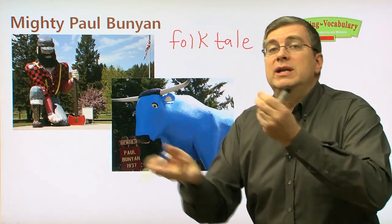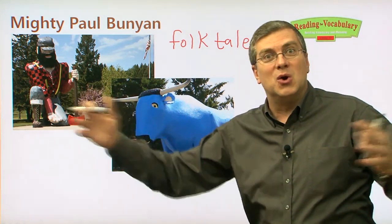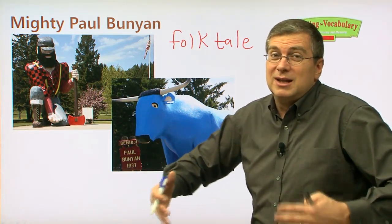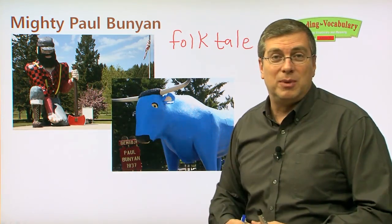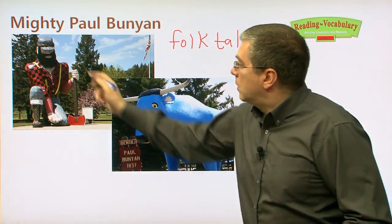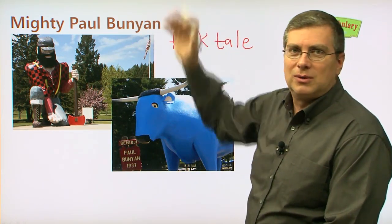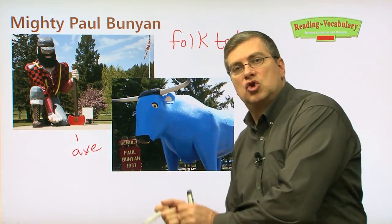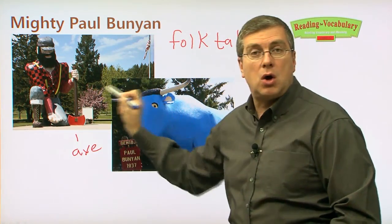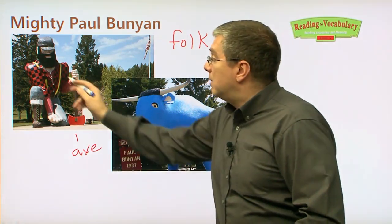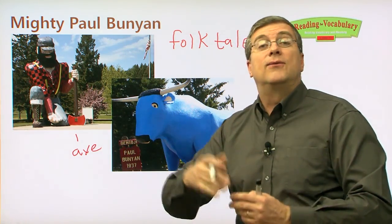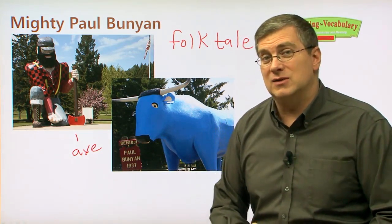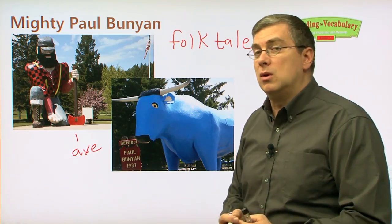Folk tales are stories that people tell each other from a long time ago, and sometimes folk tales might have a true story as the beginning, but we don't know because nobody wrote it down. They just told each other for many, many years, and sometimes the story grows and gets bigger and the characters change a little bit. Maybe there was a really big character a long time ago who was like Paul Bunyan, but nowadays we think about Paul Bunyan as a giant — many meters tall — and he has an axe. He cuts down trees. His folk tales were from a long time ago in America when many men went into the forest and cut down trees for wood, because the nation needed wood to build houses and many things.